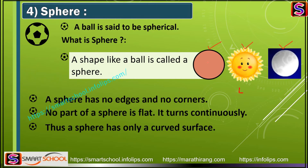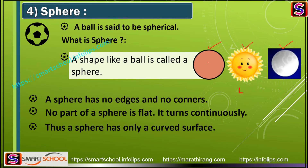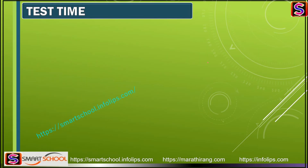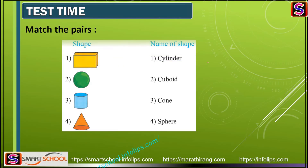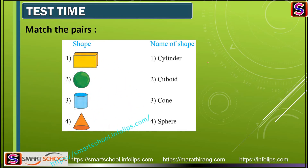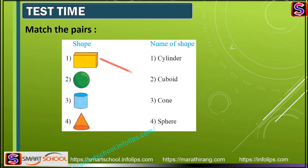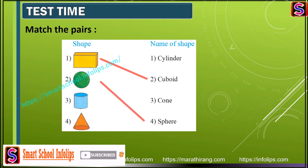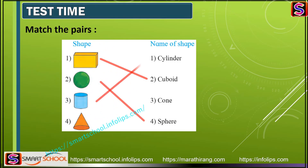We have seen four shapes: first is cuboid, second is cone, third is cylinder, and fourth is sphere. Now it's video test time! Match the pairs - column A has shapes and column B has the names. The answers are: first is cuboid, second is sphere, third is cylinder, and fourth is cone.